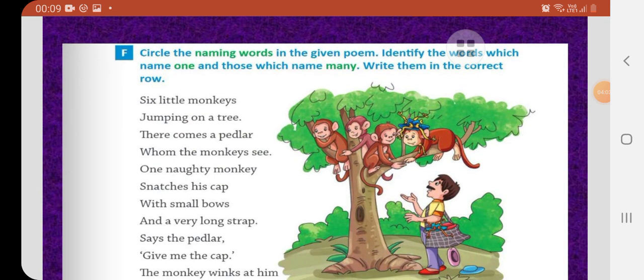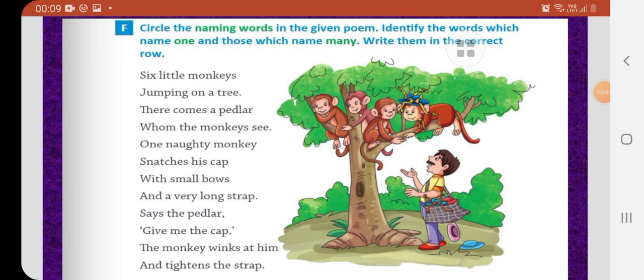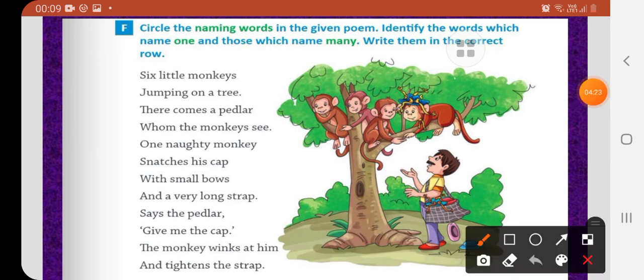So children, next exercise is F. What you have to do in this exercise, circle the naming word in the given poem. Identify the word which name one and those which name many. Write them in the correct row. So what you have to do, first you circle the naming word. You know that naming word. We have done in the previous exercise. So children, six little monkeys.